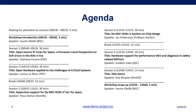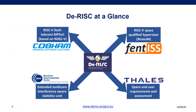Thank you everybody for being here today. I have the pleasure to introduce the workshop we'll have today. It's a workshop that mostly relates to the D-RISK project. The D-RISK is a project to deliver a RISC-V based platform for space. This includes the SoC by Cobham Gaisler — it's a multi-core SoC, fault tolerant, and will be built on top of NOEL5 IP cores.